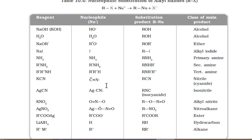If we use potassium cyanide (KCN) — an ionic compound — it dissociates to give CN⁻. CN⁻ is an ambident nucleophile, meaning it has two nucleophilic centers but reacts through only one at a time. Cyanide can attack via carbon or via nitrogen. When KCN (ionic) reacts with an alkyl halide, attack occurs from the carbon end of CN⁻, giving alkyl cyanide (nitrile) as the product.